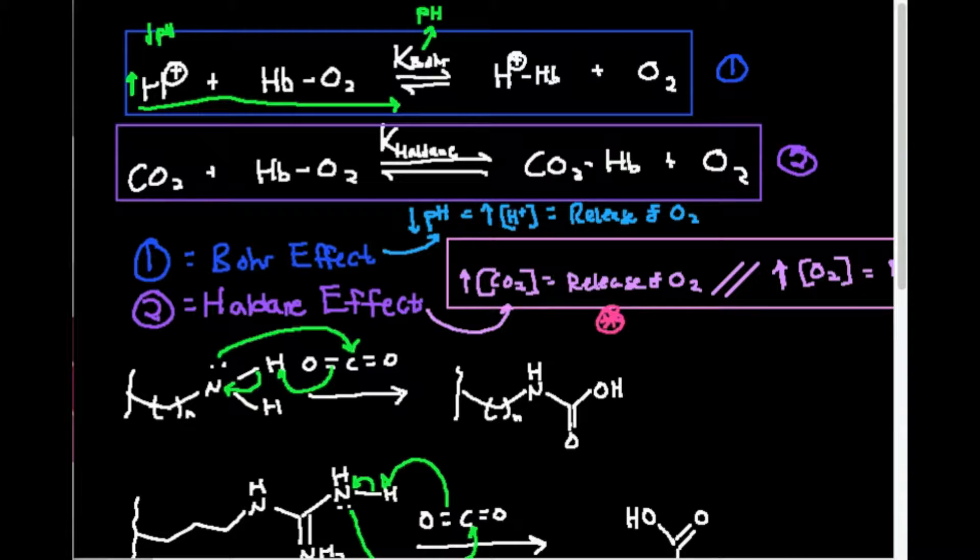Because that's the basis of Le Chatelier's principle. If I'm loading up the system or the equation with one reactant, it's going to shift the reaction towards the right to relieve the stress. So notice, if I have a lot of hydrogen ions, it shifts it to the right, and hopefully you can see that it's going to cause oxygen dissociation. In this state, in the reactant side, I have hemoglobin-bound oxygen.